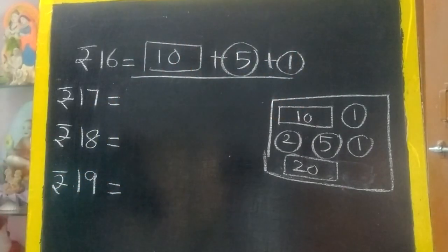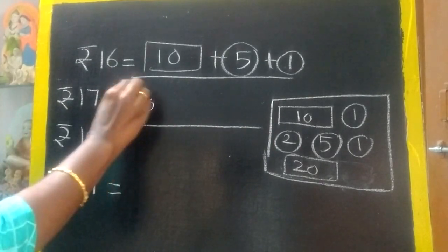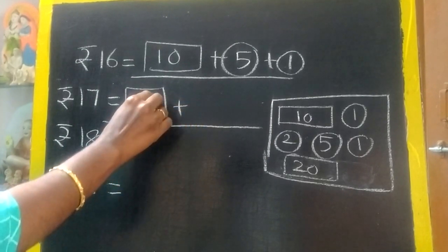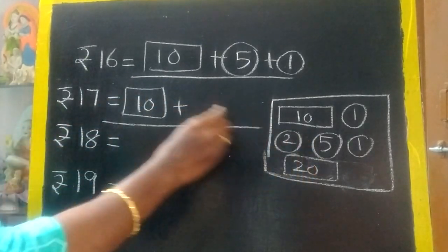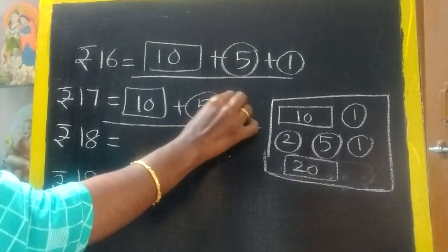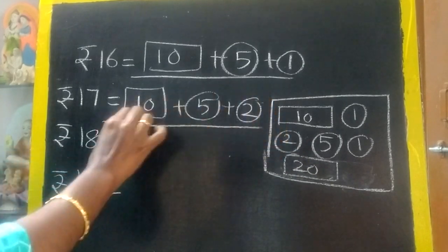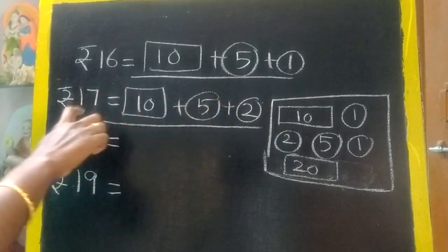There are many ways to split but we are using only highest combination. Now, 17. 10 plus 7. But there is no 7 rupee. 10 plus, how will you split 7 rupee? 5 plus 2. 17. You have to check also, add and check you should get this.